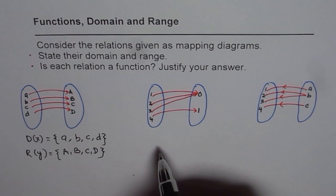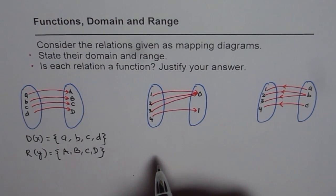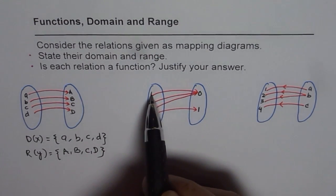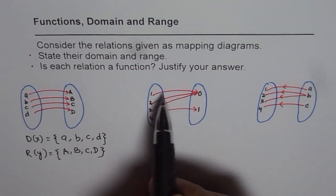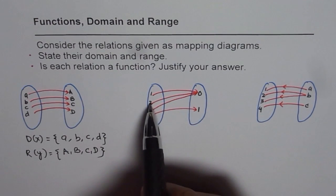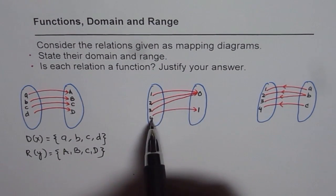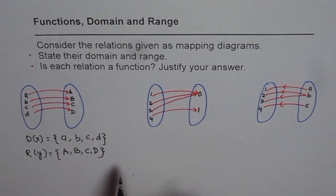Let us look into the second mapping diagram. Here every element is associated with only one: one is associated with zero, two with zero, three with zero, four with one. So each element has got one association, therefore it is also a function.